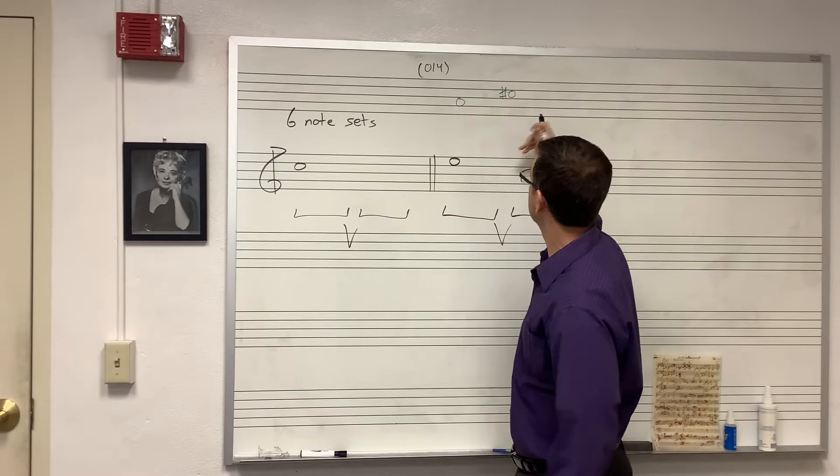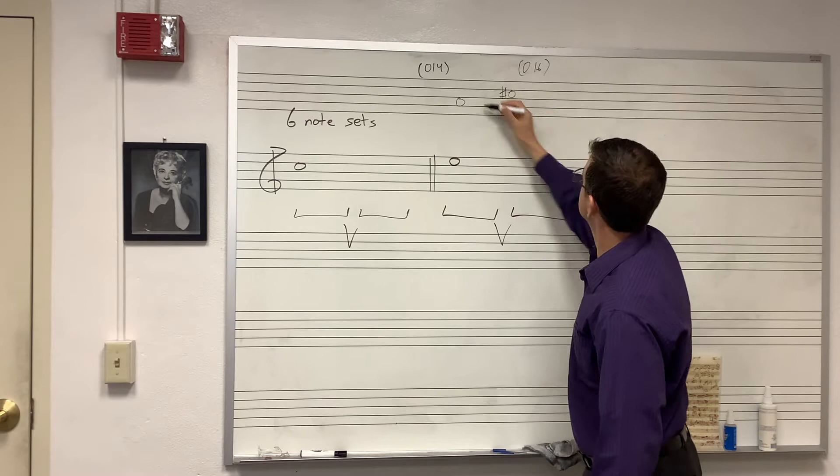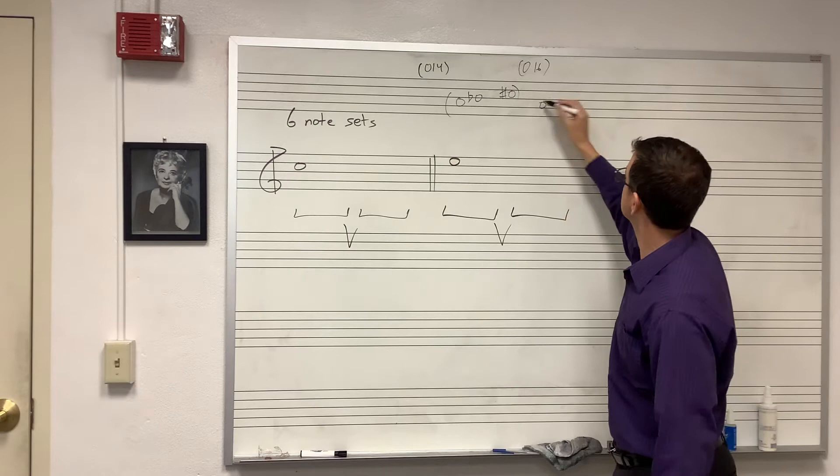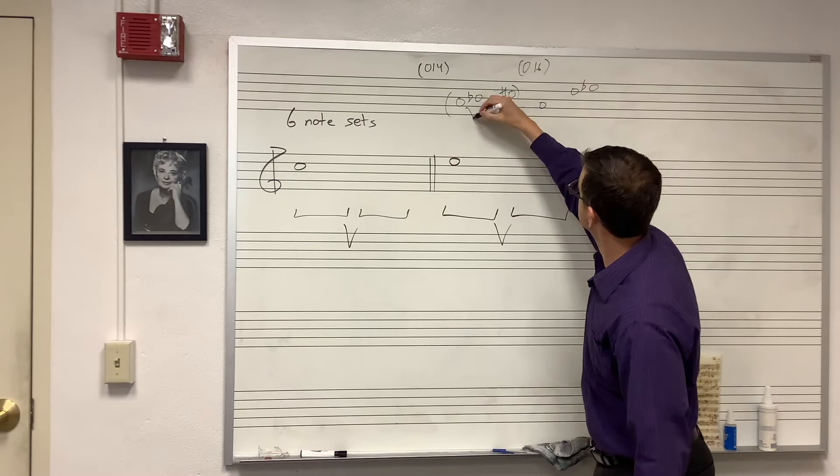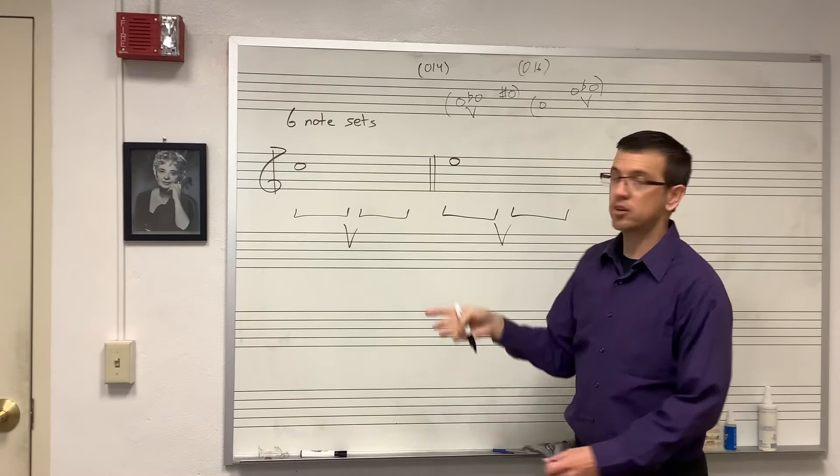A 016 will have a tritone. And it will also have a half step. So either A B flat E flat or A D E flat. So one of these will be a 014 or a 016. The other will be a triad.